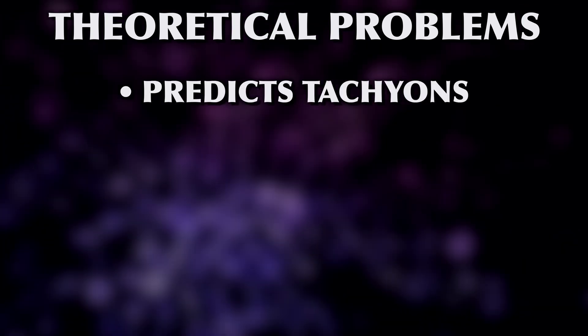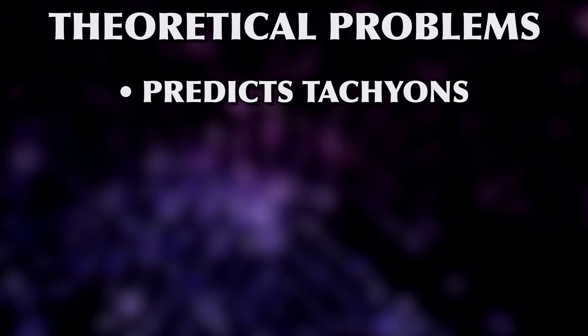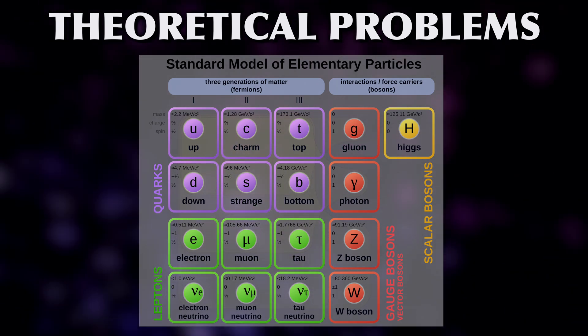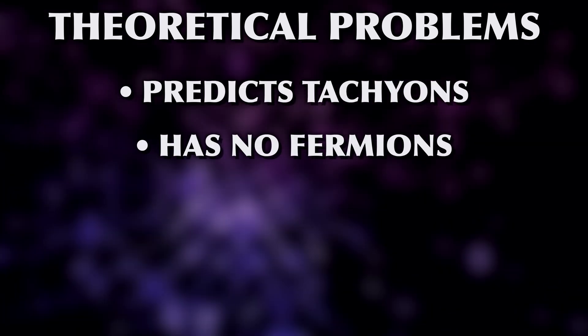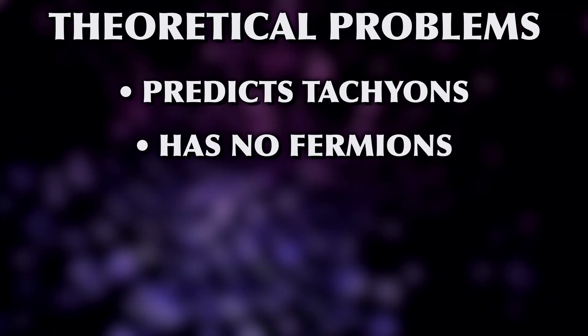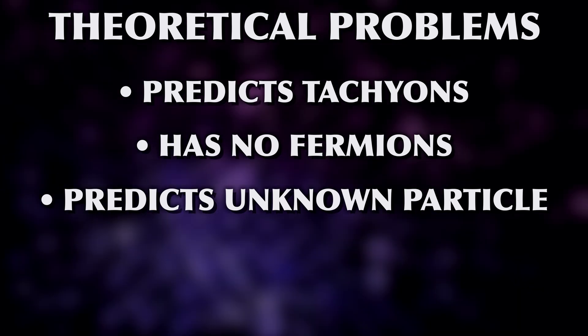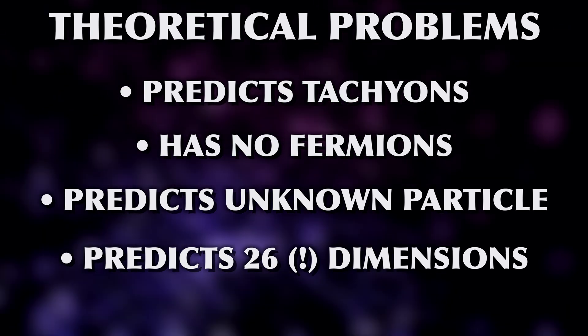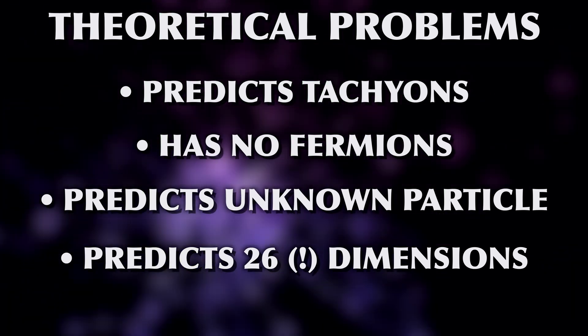Apart from not fitting the experimental evidence, early string theory also had some theoretical shortcomings. It predicted tachyons — particles moving faster than light — in contradiction to relativity and observation, and also causing instabilities in the math. Fundamentally there are two types of particles that we observe in the universe, called bosons and fermions. As string theory only described bosons, it was obviously missing something. It also predicted a massless particle with spin 2 that people didn't know what to do with, and the theory demanded 26 dimensions.